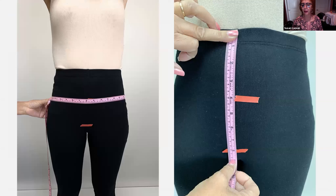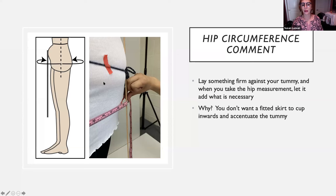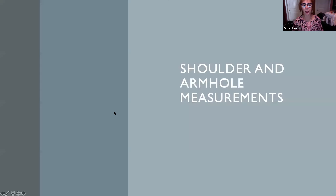Sometimes you may want to take a halfway-between measurement just for records. If you have a tummy, hold something rigid like a yardstick out and include that in the measurements — it will make your hip measurement bigger but skirts will not cup in beneath your tummy, which actually accentuates it.